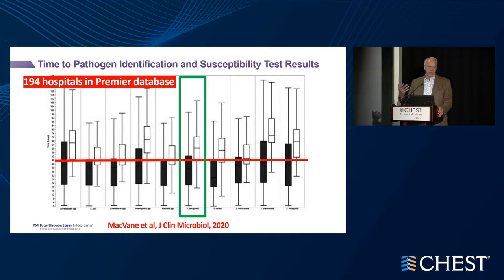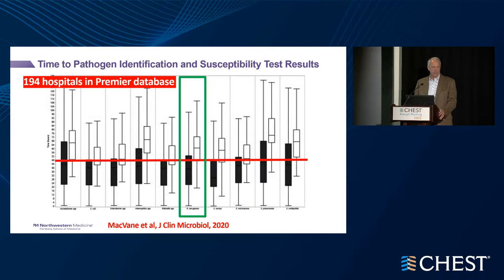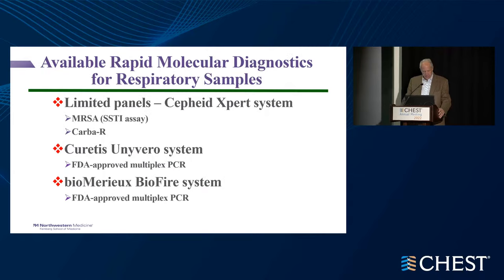Data shows that with standard culture methods, we can get a suggestion of pseudomonas causing pneumonia within 48 hours, but antibiotic susceptibility won't be known in three-quarters of patients for at least 48 hours. At many institutions, it's essentially a coin flip to know which beta-lactam will be susceptible. This demonstrates the big unmet need for rapid molecular diagnostics.